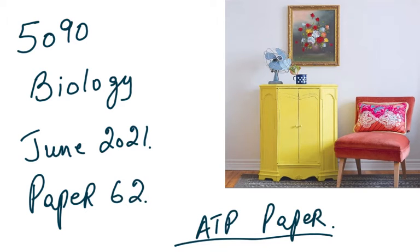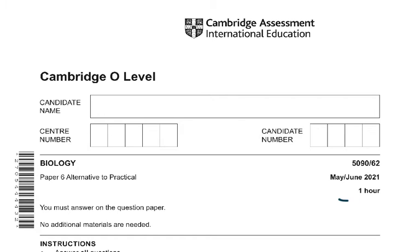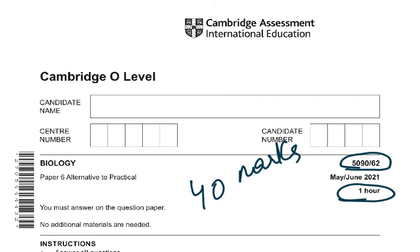Bismillah ar-Rahman ar-Rahim. This is Syllabus 5090, Biology, June 2021, and this is paper 6-2, which is another alternative to practical. We're doing the latest paper so that you can get some help with the upcoming exam in November. This exam is for one hour and the marks is 40 marks. You have 40 marks and you have one hour to get as many marks as possible.